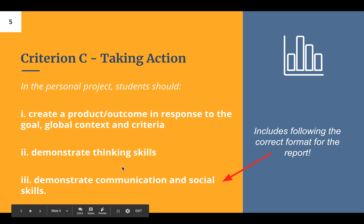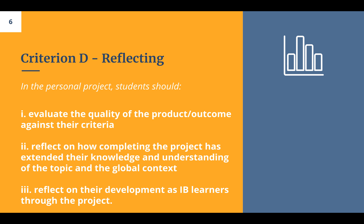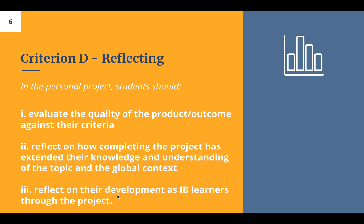When we look at communication, we're also checking that you've used the correct format and in-text citations throughout your report. You also need to evaluate the quality of your product outcome against the criteria — don't just say all the good things. Even if everything went well, consider what you'd do differently with an unlimited budget or more time, or with the skills you have now. Reflect on how the project improved your knowledge and understanding of the topic, talk about the global context, and discuss your development as an IB learner — referencing the IB learner profile or the IB's mission statement.